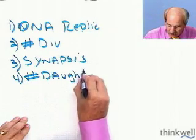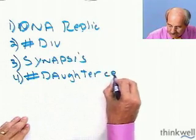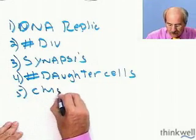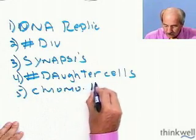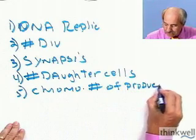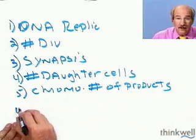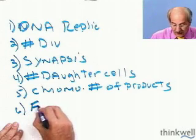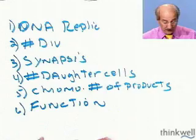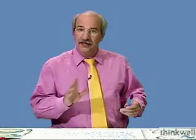Nice little rogue's gallery of things that may or may not be different. Number five, we want to look at the chromosome number of the products. And number six, we want to look at function. And just because I put that number six does not mean it's the least important. In fact, in many ways, it's where you should be beginning your comparison.